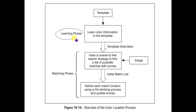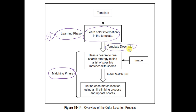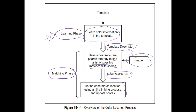There are two phases in any machine vision application. The first is the learning phase and the second is the matching phase. In the learning phase, you give the template, it learns the color information, and creates a template descriptor. Then in the matching phase, it takes the image and uses a coarse-to-fine search strategy to find a list of possible matches with scores, producing initial matches. Then it refines each match location using a hill-climbing process to update its score — this hill-climbing process is basically a fine-tuning algorithm which helps refine the match.